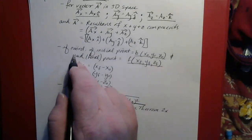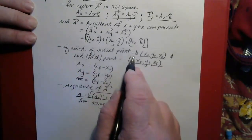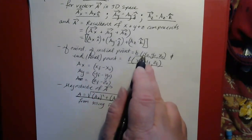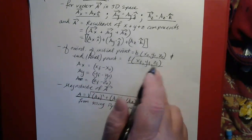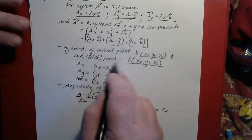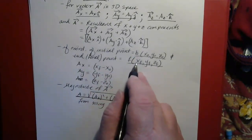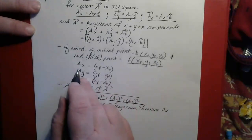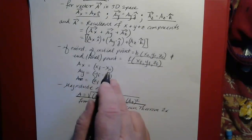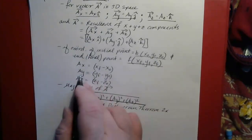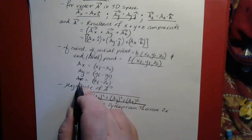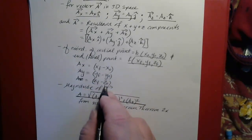If you have coordinates of some initial point b — with components x-original, y-original, and z-original — and an ending or final point f with coordinates x-final, y-final, and z-final, then the magnitude of the x component of vector a is x-final minus x-original. Same with the y component. And the magnitude of the z component is z-final minus z-original.